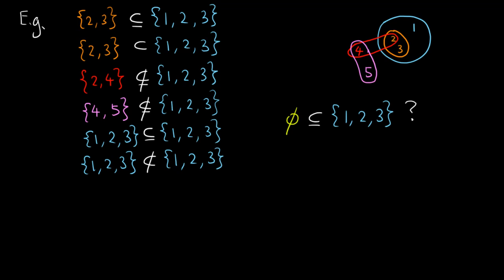Now let me ask you a question. Is the empty set a subset of the set {1, 2, 3}? Recall the definition, rephrased: for A to be a subset of B, whenever I have an element in A, that element also needs to be in B. Now consider A to be the empty set. If I try to look for an element in A, I cannot find any, so I do not have to check whether it is in B. In this case, the definition of a subset holds trivially. In other words, the empty set is a subset of the set {1, 2, 3}.